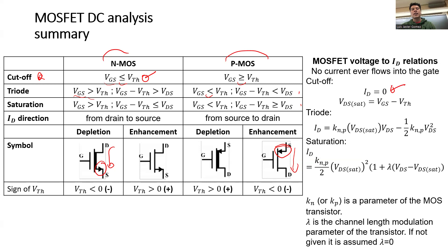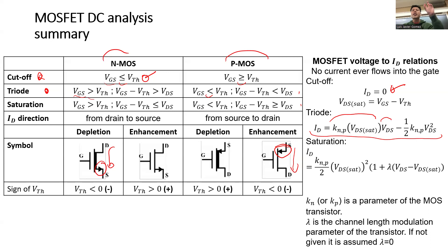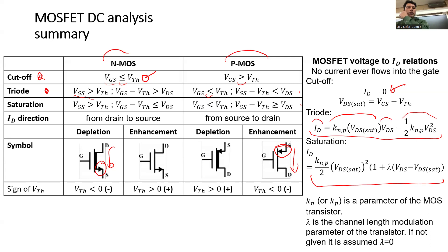We're going to have the triode region where the current actually behaves somewhat like a resistor — resistance times voltage, or conductance times voltage gives you the current, plus a little nonlinear quadratic term. That's what's called the triode region. And then in saturation, we will have a constant current independent of the voltages at a fixed level. That's why it's called saturation — it's a constant current, so this will just be a number.